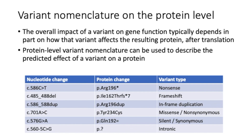This slide shows some example variants in the TP53 gene and how the nomenclature describes the predicted effect of the variant on a protein. In the first example, the C to T nucleotide substitution at C dot 586 leads to the creation of a stop codon at the corresponding amino acid residue in the protein, position 196. This is called a nonsense variant. The new premature stop codon is denoted by the asterisk.